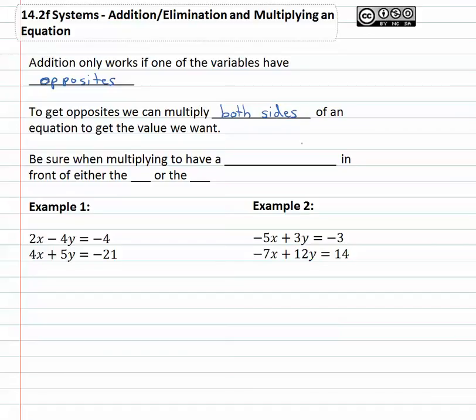We have to be sure though when multiplying to have a negative in front of either the x or the y. You want to have a negative in front of one of them and a positive in front of one of them. That way the positive and negative will subtract out to zero and we're down to one variable.